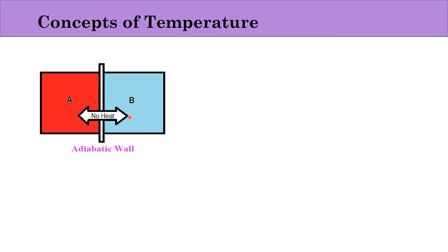These two systems are made to interact with each other through an adiabatic wall. An adiabatic wall is a wall which does not allow heat transfer. Because of this adiabatic wall, there is no change in the thermodynamic properties of the two systems even after a long time.